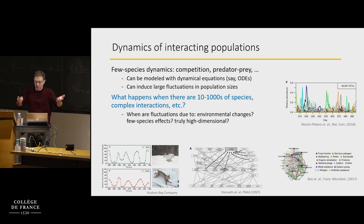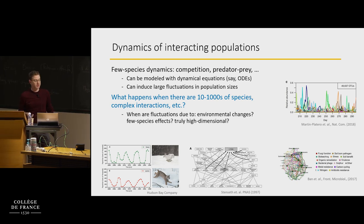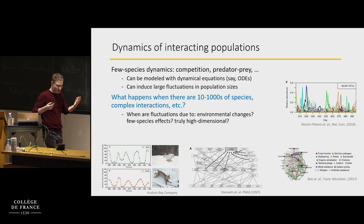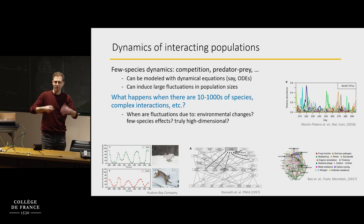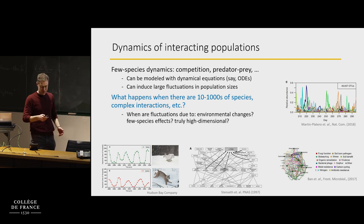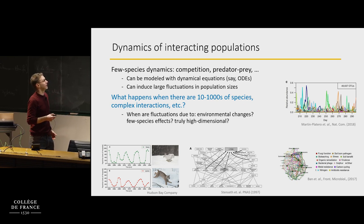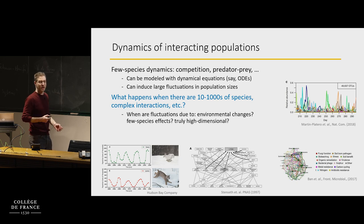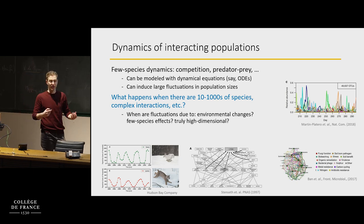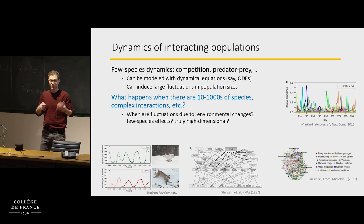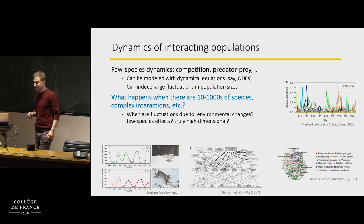What happens there? If you were hoping that things will calm down and you won't see too many fluctuations, that's not the case. There are situations where you see enormous fluctuations in population sizes when there are many species around.